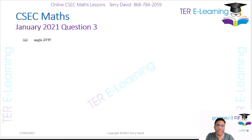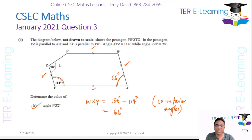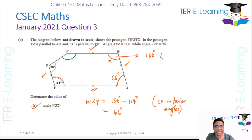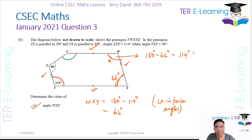The next thing they want is angle ZVW. ZVW is this angle here. We can figure it out because this length and this length are parallel. That intermediate angle is simply 180 degrees minus 66 degrees. The reason is that angle and the 66 are co-interior angles. So 180 minus 66 gives 114 degrees. So that angle is 114 degrees.